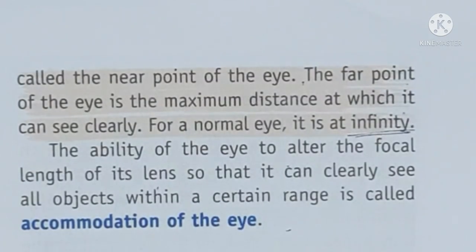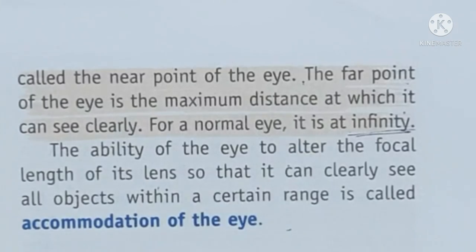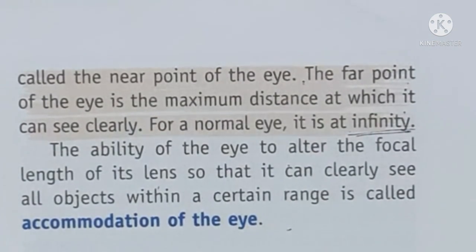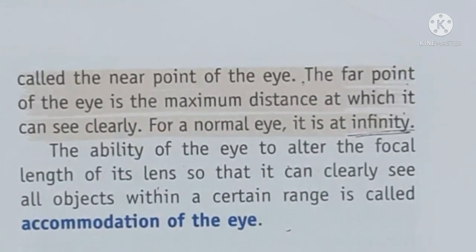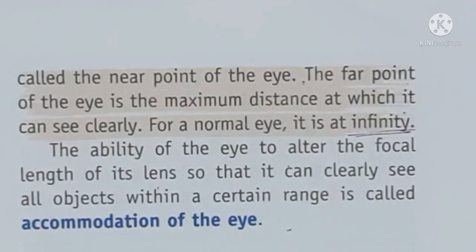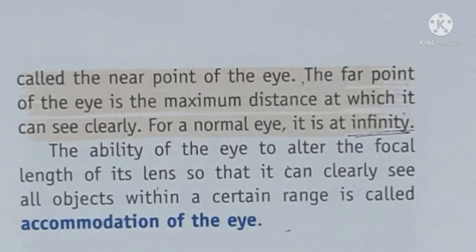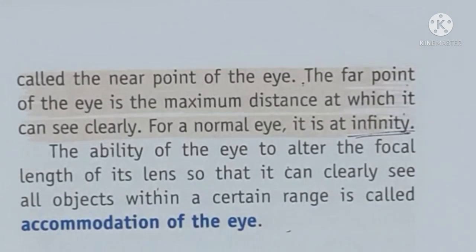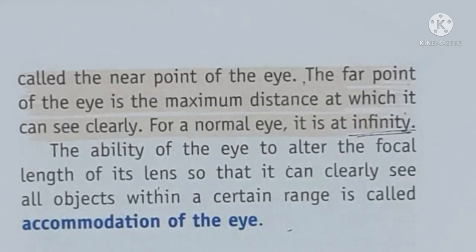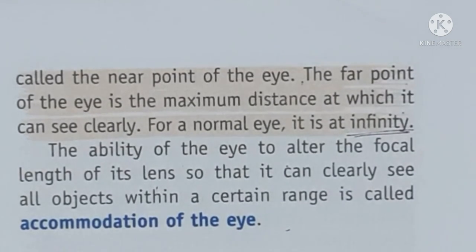Aur yahi jo ability hoti hai aapki aankhon ka to change the focal length of the lens, by making it thinner or thicker, with the help of the ciliary muscles, so that you can see the distant and the nearby object — this is only called the accommodation of the eye. So I hope aapko clear ho gaya hoga. Agar koi bhi doubt hai is topic mein, toh you can ask me in the comment section. And in the next video, I am going to discuss the defects of vision.